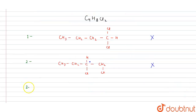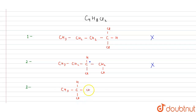The third isomer is CH3-CHCl-CH2-CH2Cl. Is there a stereocenter? Only one stereocenter is present here; the other carbons are not stereocenters. Since we need at least two stereocenters for a meso compound, this isomer is also not a meso isomer.